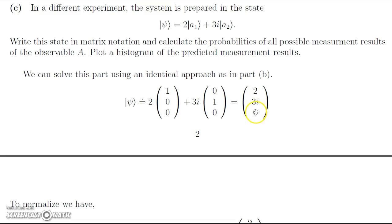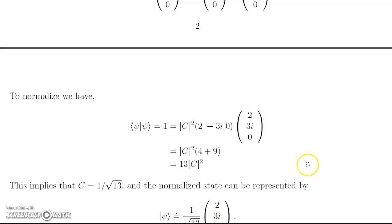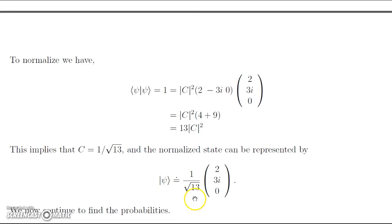We have to normalize because the state is not yet normalized. We find the normalization constant, capital C. The row vector is (2, -3i, 0) — taking the adjoint — multiplied by the column vector (2, 3i, 0). We're left with 1 equals 13 times the modulus of C squared. Since the overall phase has no physical meaning, we choose C equal to 1 over root 13, giving the normalized state psi equal to 1 over root 13 times (2, 3i, 0).